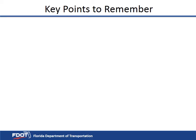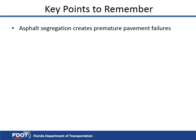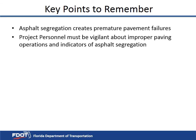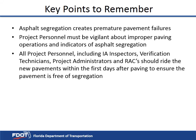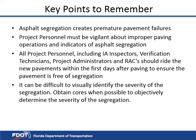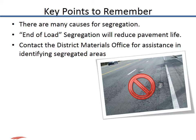Here are some key points to remember. Asphalt segregation creates premature pavement failure. All personnel must be vigilant about improper paving operations and indicators of asphalt segregation. All roadway personnel — IA inspectors, verification technicians, project administrators, and RACs — should ride the new pavement within the first few days after paving to ensure the pavement is free of segregation. It can be difficult to visually identify the severity of segregation, so obtain cores when possible to objectively determine severity. There are many causes for segregation; all segregation will reduce pavement life. Contact the district materials office for assistance in identifying segregated areas.